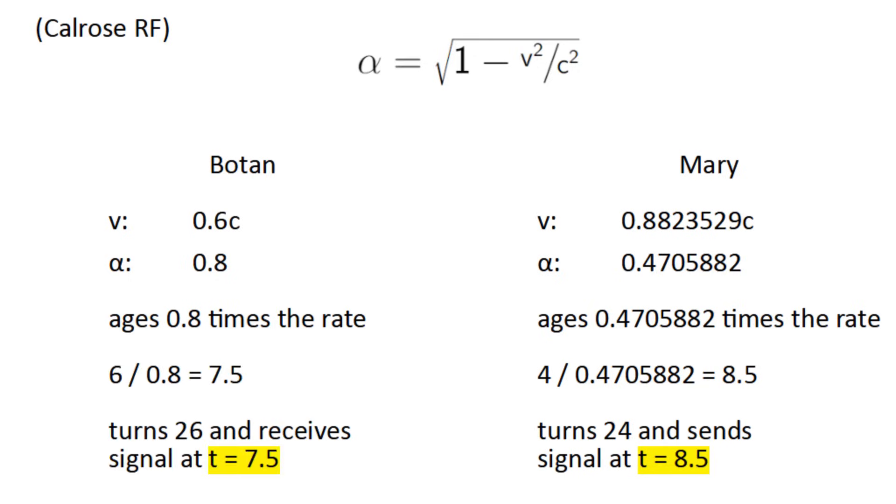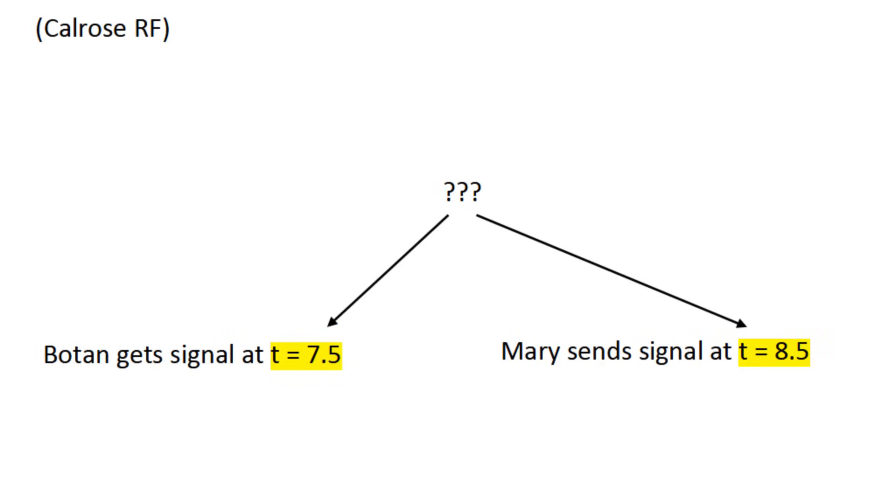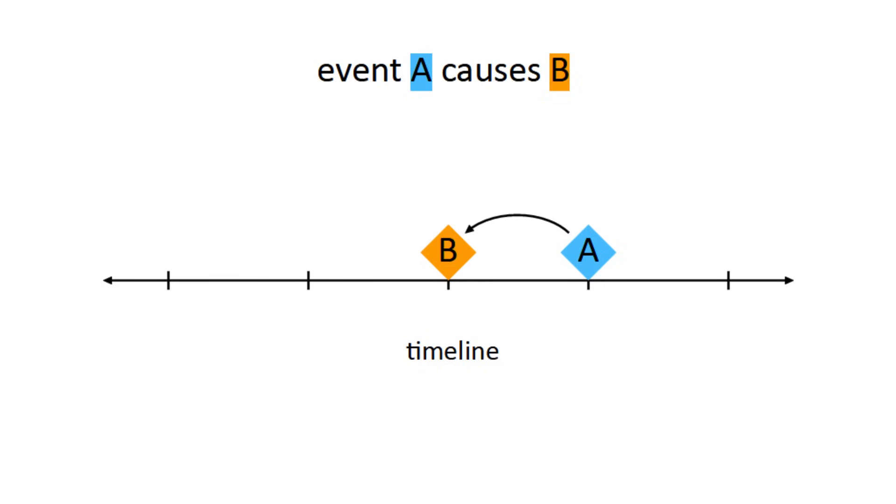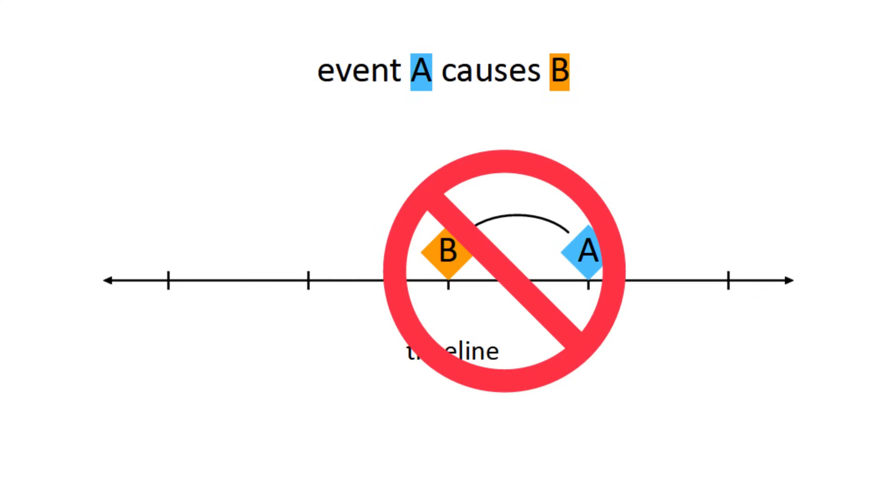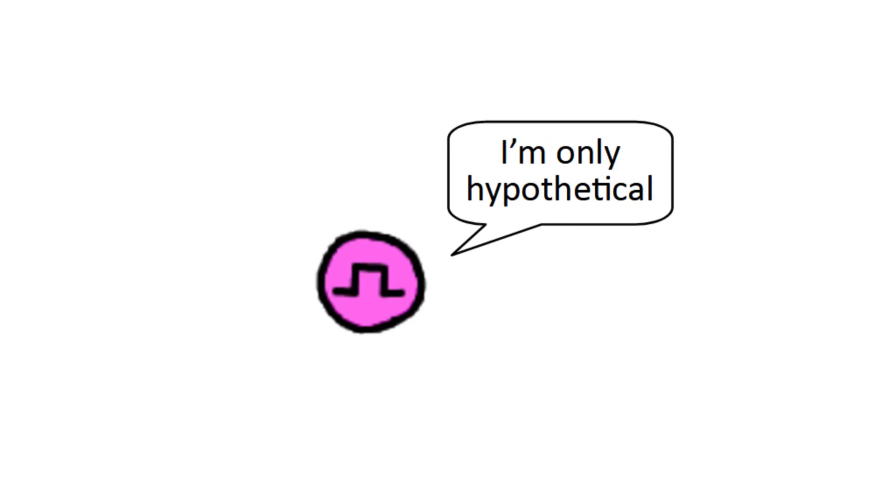Now do you notice anything strange about these times? Well, in this reference frame, Botan receives the signal before Mary even sends it. But Mary sending the signal is what caused Botan to receive it. You can't have a reference frame where the effect happens before the cause, hence a paradox of causality. For this reason, tachyons are only hypothetical.